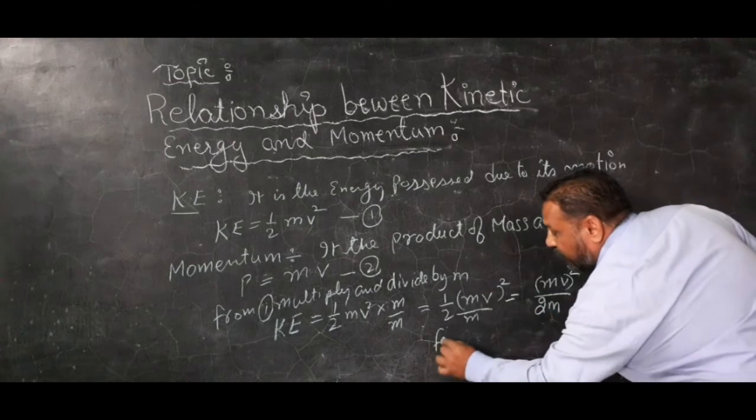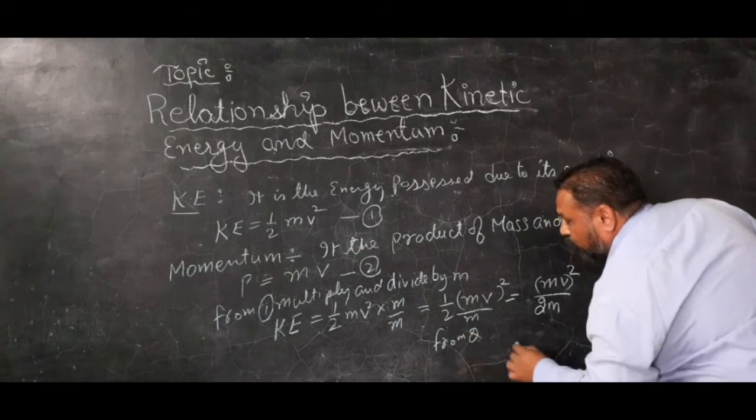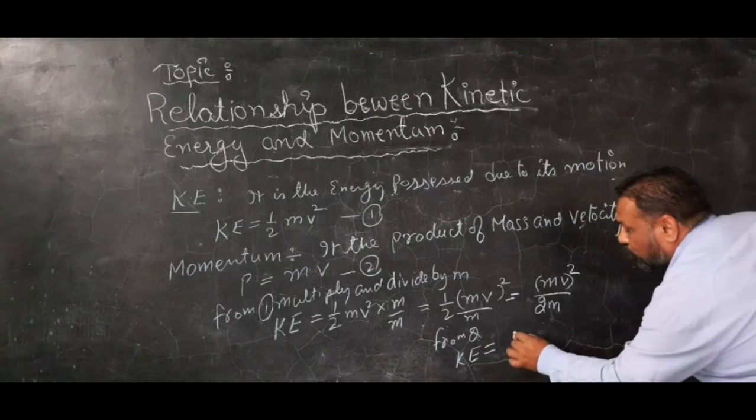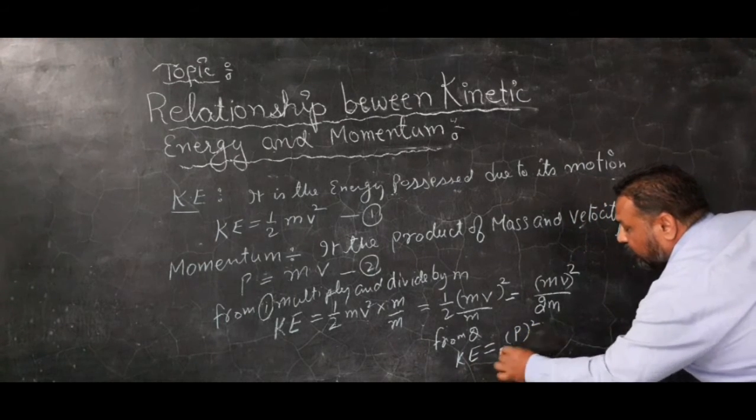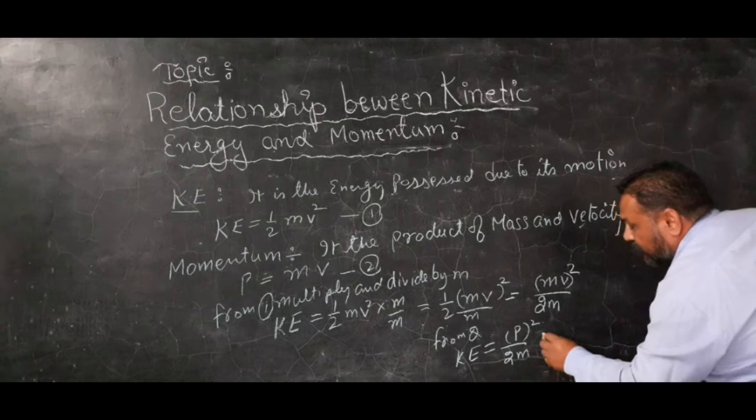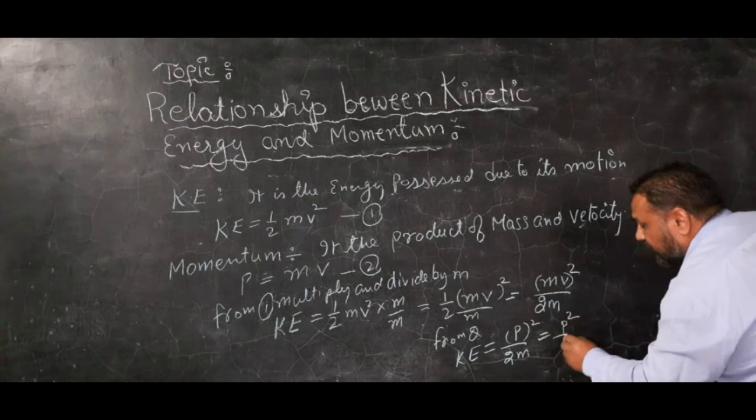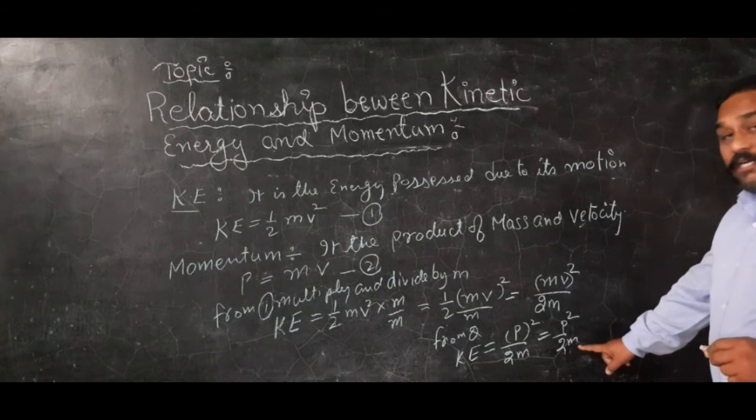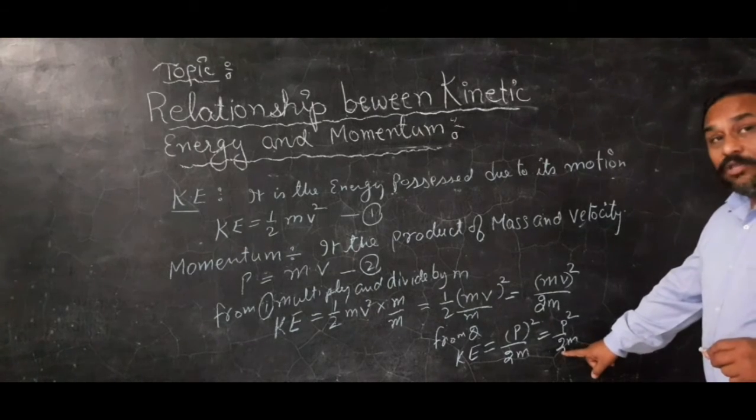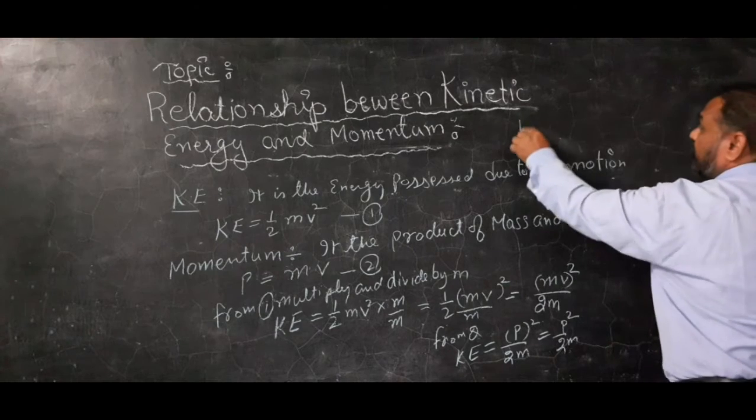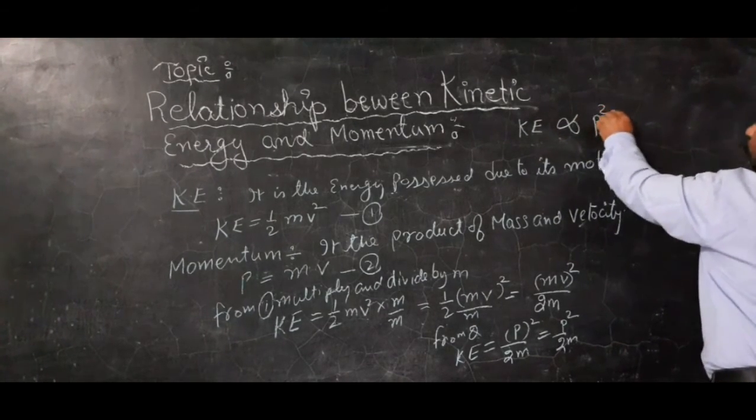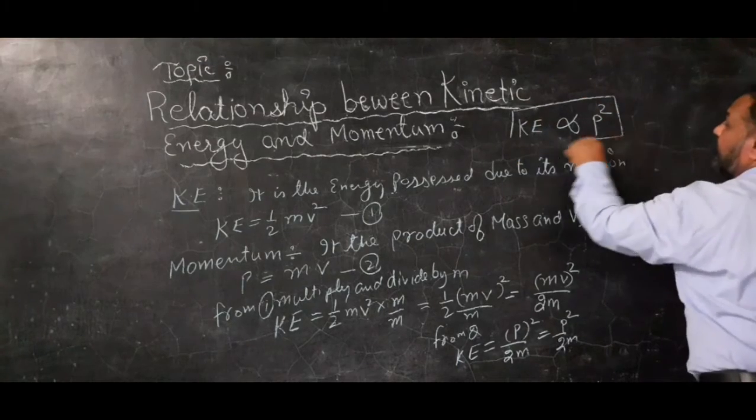Kinetic energy is equal to p squared over 2m. That means p squared over 2m - m is constant, 2 is also constant - we will have the relationship: kinetic energy is directly proportional to the square of momentum.